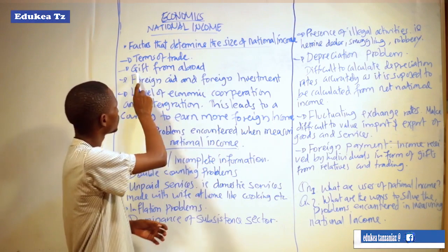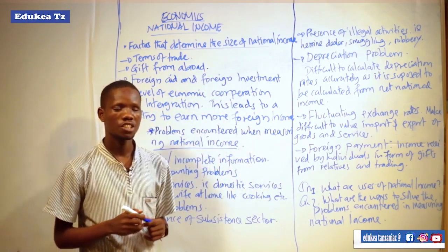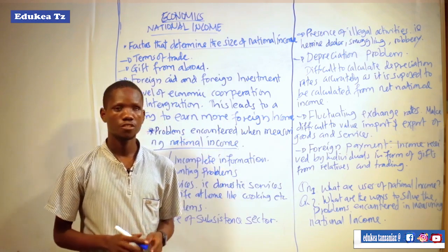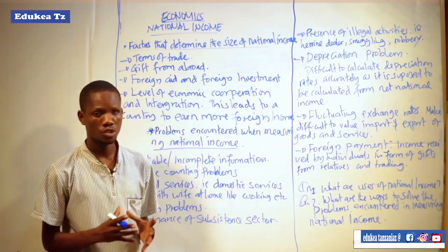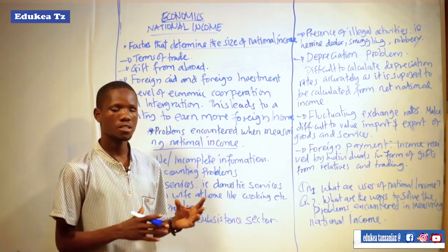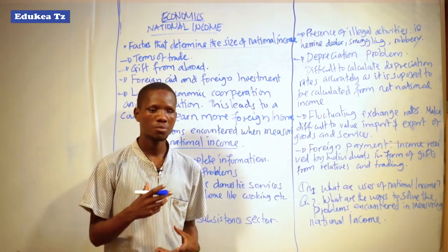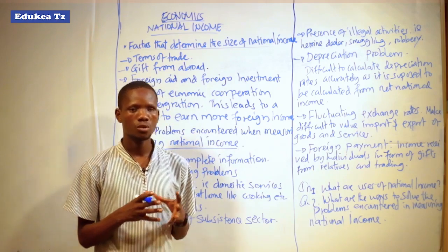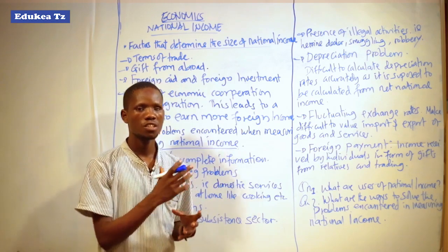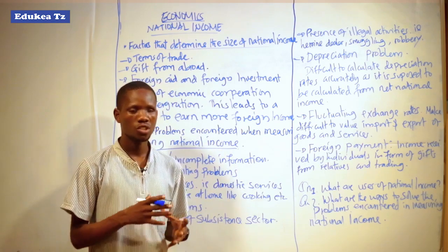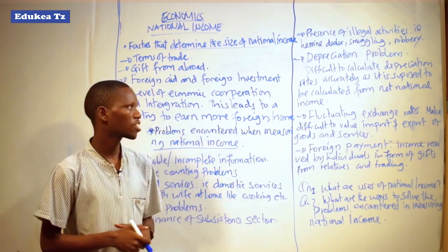Another factor is gifts from abroad. A country can be given gifts in different forms, especially financial support in different economic activities — social activities and other activities — particularly those which contribute to the generation or production of different goods and services, which can increase the gross domestic production of goods and services in a country.